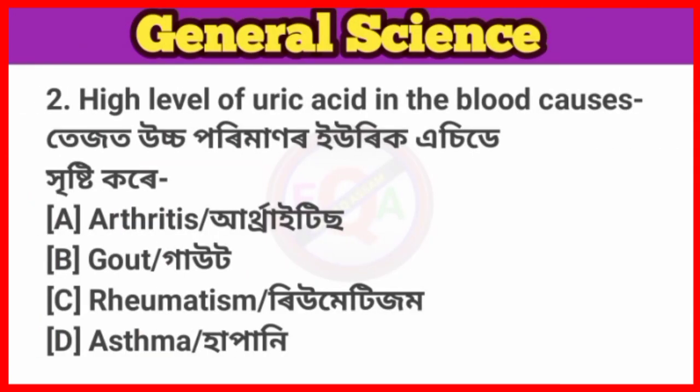Question No. 2. High level of uric acid in the blood causes? Answer: Option B, Gout.